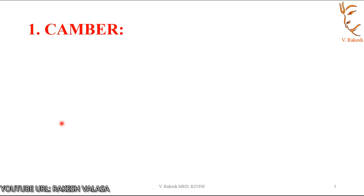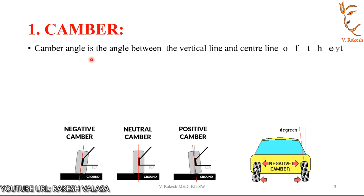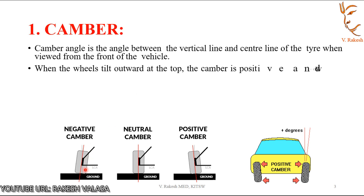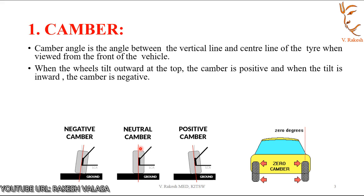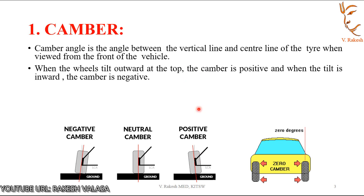1. Camber Angle. The camber angle is the angle between the vertical line and the center line of the tire when viewed from the front of the vehicle. Here, there are three different positions. The red color indicates the center line of the tire and the green color indicates the vertical line of the ground. When the wheels tilt outward at the top, the camber is positive. You can see this angle in this figure.